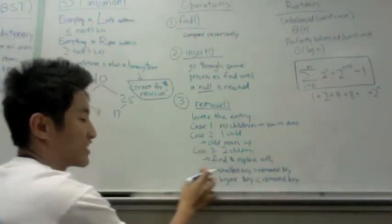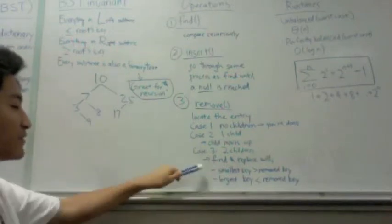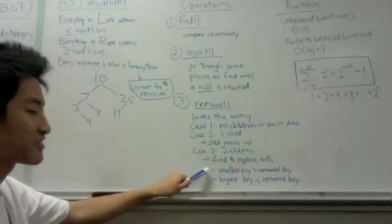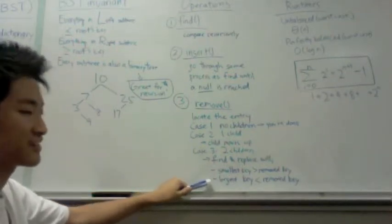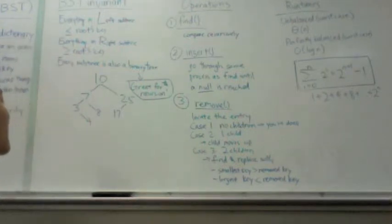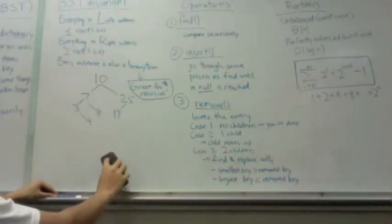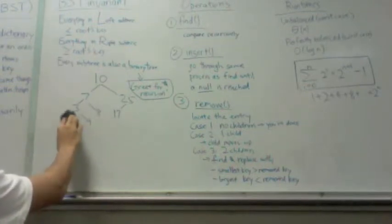So this pretty much just translates to the key furthest left in the right subtree or the key furthest right in the left subtree. So say we wanted to remove 7. Then we can either replace it with 8 or with 3,